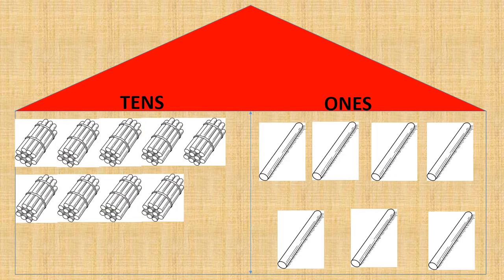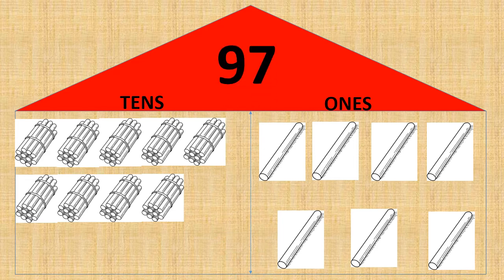Now here we have one, two, three, four, five, six, seven, eight, nine — nine bundles of tens. That means we have nine tens. And in ones we have one, two, three, four, five, six, seven — seven ones. Nine tens and seven ones gives us the number ninety-seven.